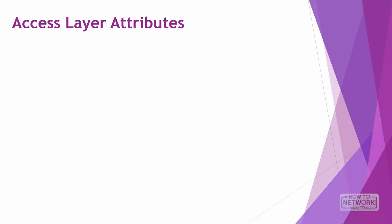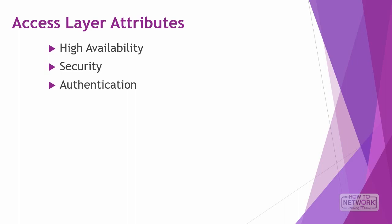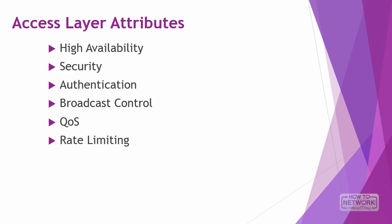Specific features at the access layer include high availability and flexible security features. You can implement authentication, broadcast control, and define QoS trust boundaries. Rate limiting techniques are also implemented at the access layer, as well as spanning tree protocol programming. Also included are power over Ethernet for phones and voice VLAN settings configuration.